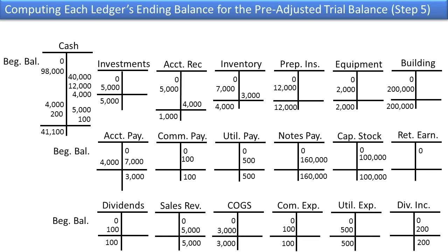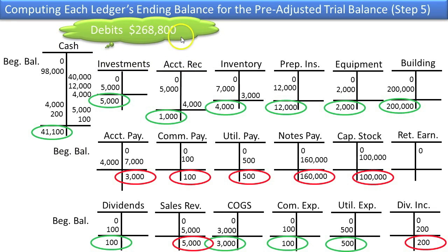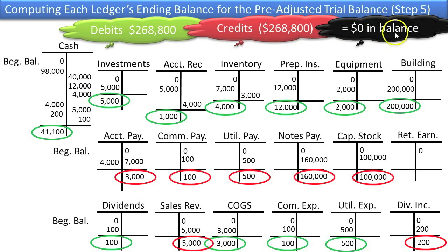You should recall this diagram from the prior video. This is every single ledger account in the business that we've dealt with so far, and their respective debit or credit balances. What we're now going to do is take all the debits, add them up on a list, and all the credits, add them up on the same list. We're going to take the total of all debits, which is going to be $268,800, and deduct all of the credits, which will also be $268,800, and the sum of that is zero. So debits show us positive numbers and credits show us negative numbers when we prepare the trial balance.